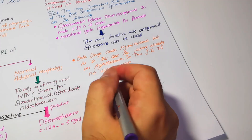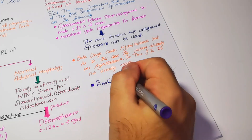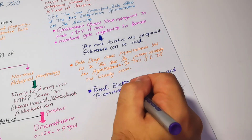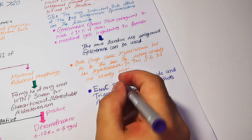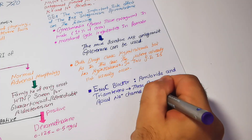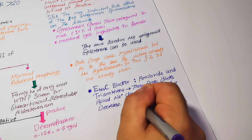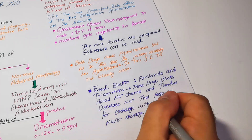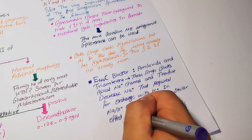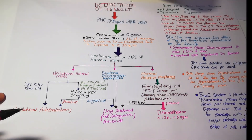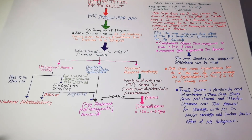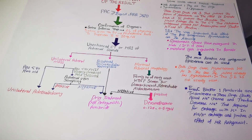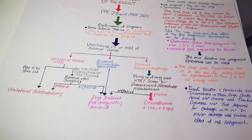The second group of drugs is the epithelial sodium channel blockers, including amiloride and triamterene. These drugs block the apical sodium channel, decreasing the sodium available for exchange with potassium, producing a similar effect to mineralocorticoid antagonism. These drugs will be discussed in detail in the diuretics video. In summary, we have covered the diagnosis and treatment of patients with hyperaldosteronism, focusing on primary hyperaldosteronism. For secondary hyperaldosteronism, we must treat the underlying condition. Thank you very much.